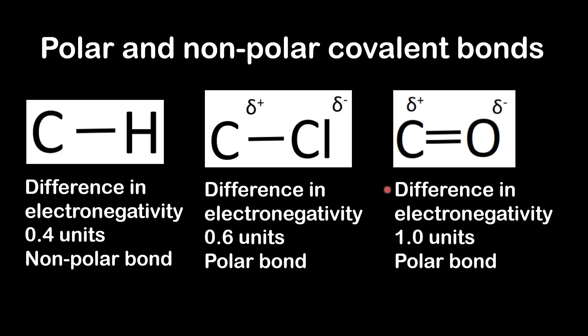The difference in electronegativity for the carbon to oxygen double bond is 1.0 units — it is a polar bond. The oxygen has a negative dipole and the carbon has a positive dipole. That's all from this video; don't forget to check the video description for a link to a practice worksheet.